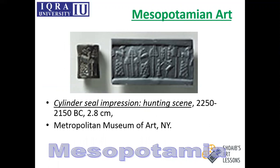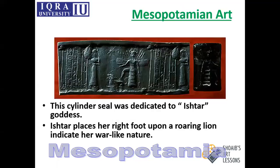The Mesopotamian civilization was very fond of gods and goddesses. This is a cylinder seal featuring the Ishtar goddess, who was a very powerful and widely worshipped goddess of that time. Ishtar was a very violent goddess — you can find her foot resting on a roaring lion, which indicates her powerful and war-like nature.